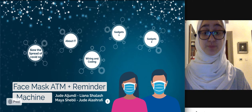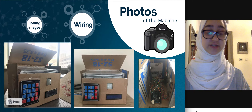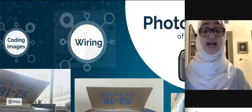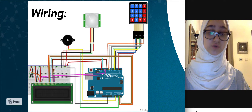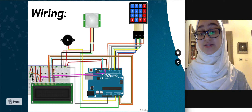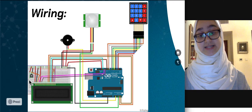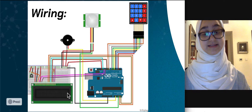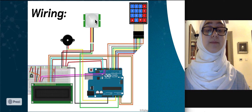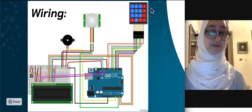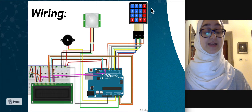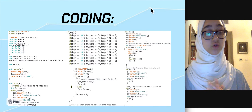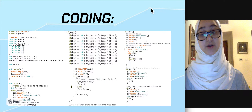My first part was inserting photos of our desired look for the project. I then inserted photos of the wiring, and as you can see here, we have connected a potentiometer, an LCD, a buzzer, a motion sensor, and a 4x4 keypad. This is the overall look of our wiring.